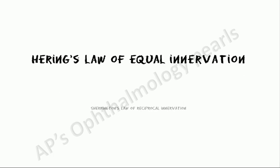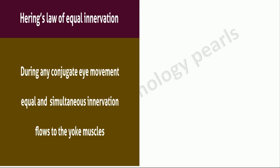Hering's law states that during any conjugate eye movement, equal and simultaneous innervation flows to the yoke muscles.